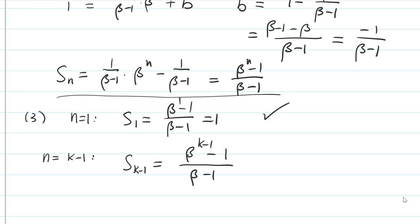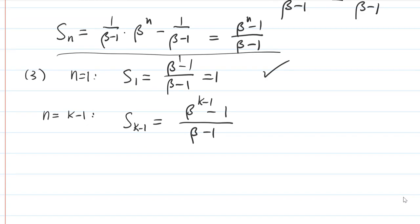Replace n by k. And then we need to verify the next step when n is equal to k. That means Sk, we need to find the formula. And then we use the recursive relation. Sk is Sk minus 1 plus beta to the k minus 1. Remember this is actually k minus 1 if you remember that part.